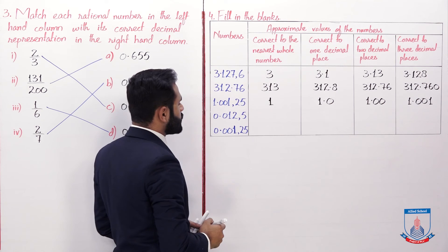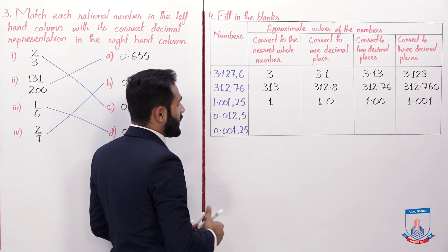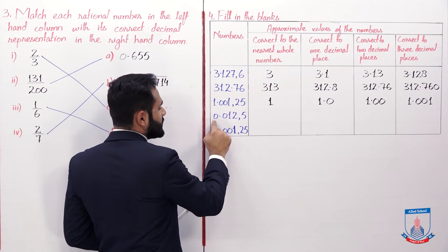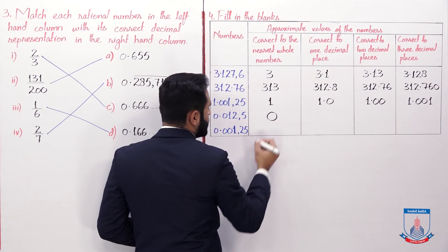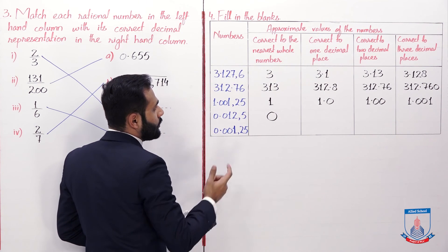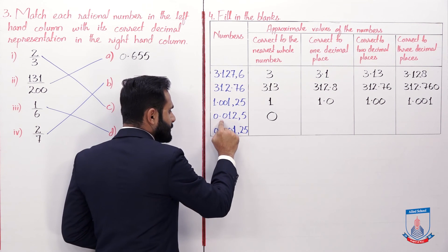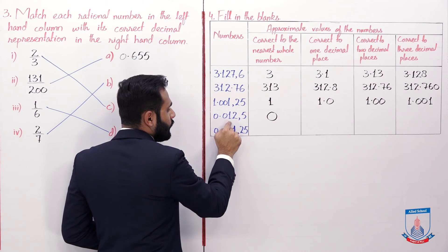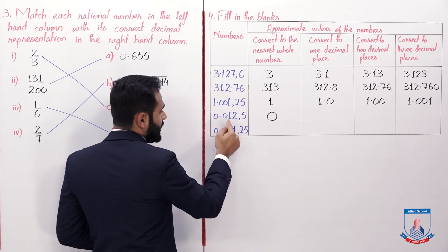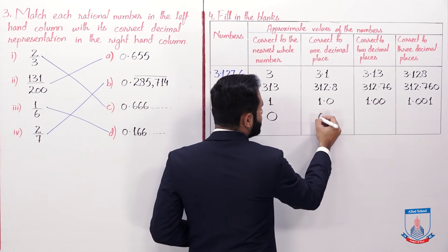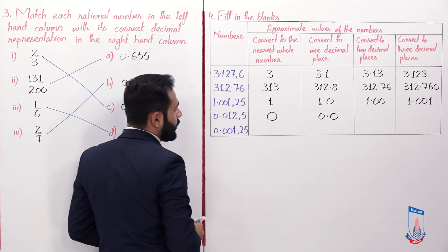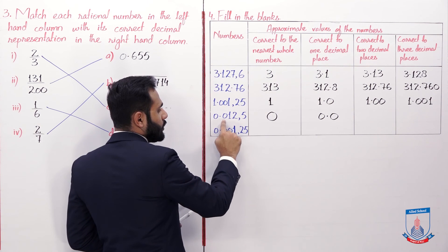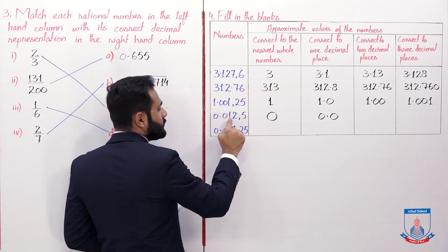The next number is 0.0125. Nearest whole number: digit after decimal is 0, less than 5, so it is 0. One decimal place: the second digit is less than 5, so it is 0.0. Two decimal places: the first is the first decimal place, the second is 1, so it is 0.01.